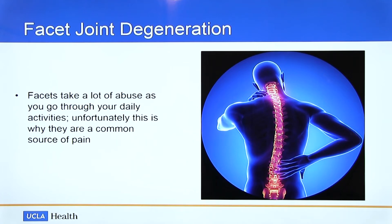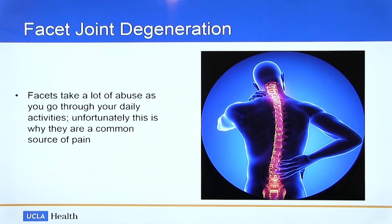Most of the motion in our spine takes place in the neck and in the lower back. Therefore, the facet joints in the neck and lower back are most prone to develop arthritic changes. Most people with facet joint disease and facet arthritis have neck pain or lower back pain as a result. You can get facet disease elsewhere, but as there is less motion in the remainder of the spine, you are less likely to develop facet arthritis or pain there.